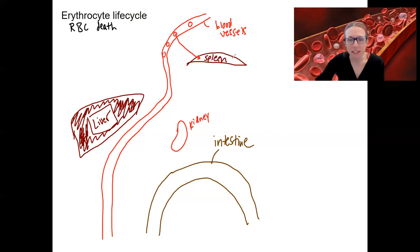So in the spleen, we're going to have the red blood cell broken down by macrophages that ingest them and break them down into their components.